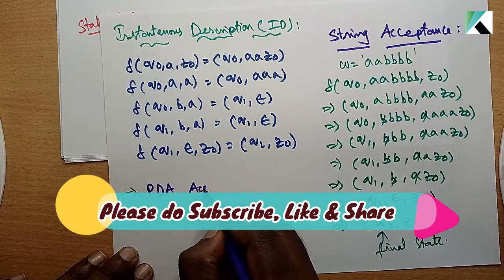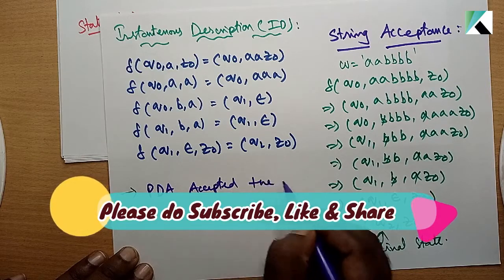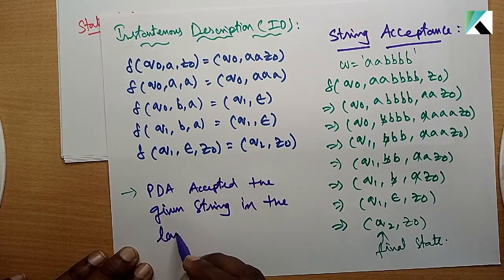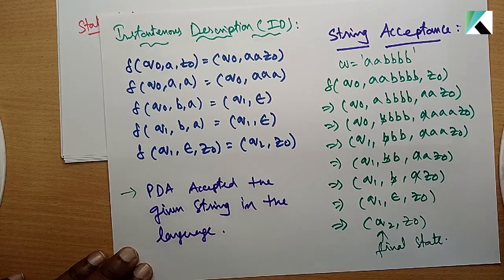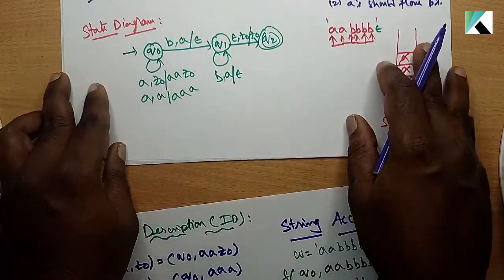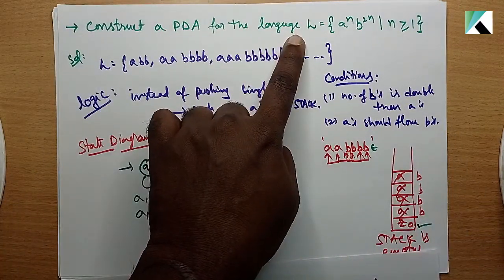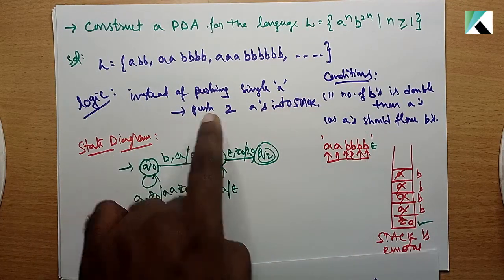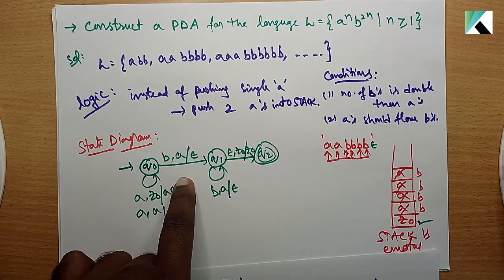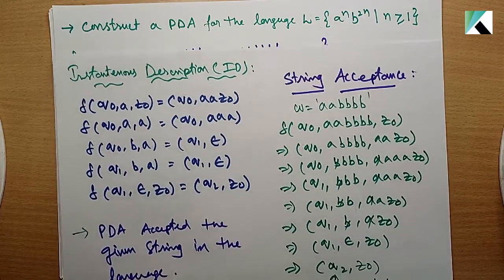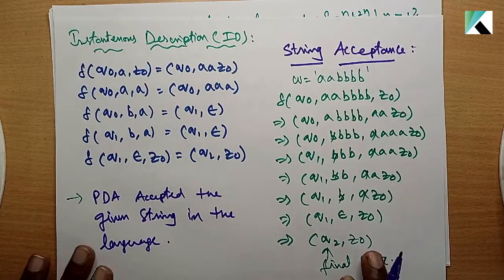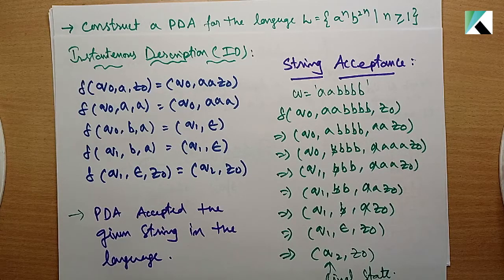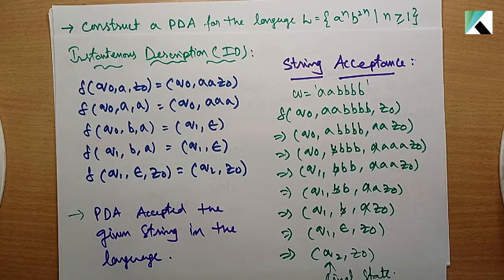PDA accepted the given string in the language. That is the conclusion. To summarize: define the language, identify the conditions, determine the logic, trace a string, design the state diagram, write instantaneous descriptions, then show string acceptance. This is the complete solution for a power n b power 2n. Thanks for watching, please subscribe, share and like.